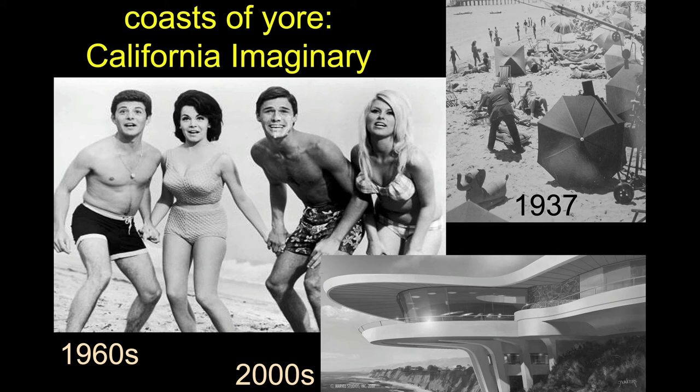I want to start by talking about what I'm calling the California coastal imaginary. This is really an invented vision of the coast as an idyllic place — a place of goodness, often super whitewashed, often pretty wealthy, often free of the world's problems.